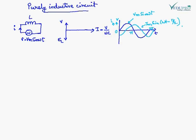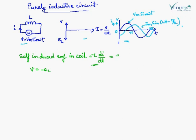Now we will see the effect of a purely inductive circuit. The voltage applied is VM sine omega t, and the coil has inductance L Henry. The self-induced EMF in the coil is minus L di by dt. Since the applied voltage at every instant is equal and opposite to the self-induced EMF, V equals minus of minus L di by dt, so VM sine omega t equals L di by dt.